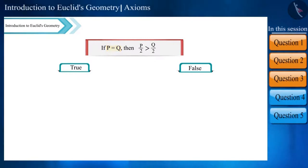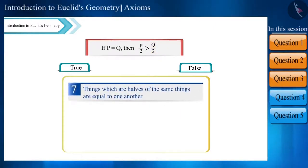If P is equal to Q, then half of P will be greater than half of Q. According to Euclid's seventh axiom, things which are halves of the same things are equal to one another. Here, P by 2 is equal to Q by 2, so this statement is false.